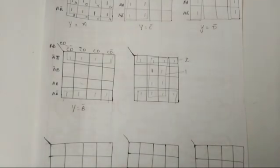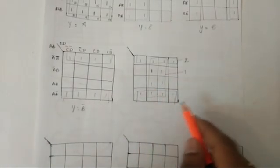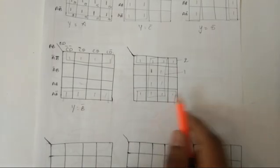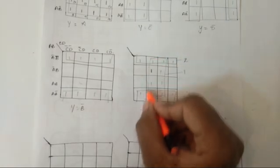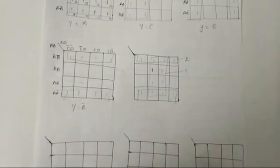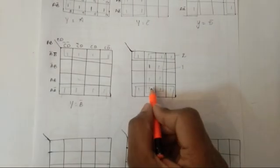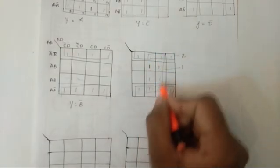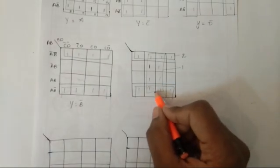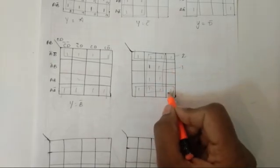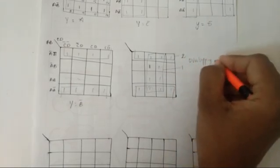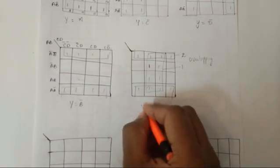In the last video I was discussing about the special case of the octet. In this case I can make two octets: one is this octet and the second one is this. In this octet, some ones are being overlapped — they are being used by group one as well as by group two. This case is called the overlapping case.